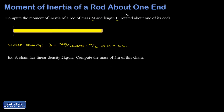Let's look at a quick example. A chain has linear density 2 kilograms per meter. Hopefully that makes sense — every time you pick up a meter of it, that's 2 kilograms of mass. We want to compute the mass of 5 meters of this chain. Mass is lambda times L: 2 kilograms per meter multiplied by 5 meters. The meters cancel, and I get 10 kilograms of chain.